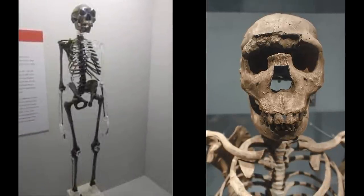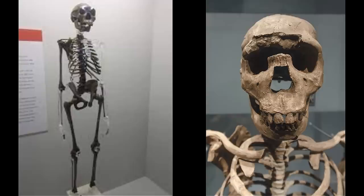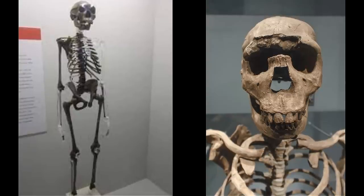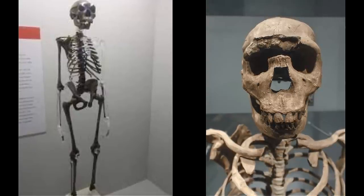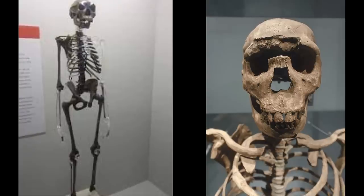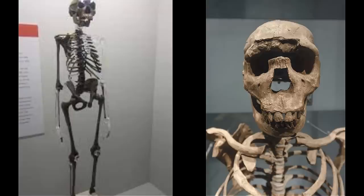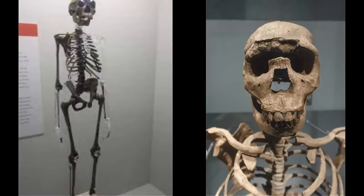Nariokotome Boy was clearly right-handed, as indicated by the deeper bone insertions of his deltoid muscles in his clavicle, collar bone, and the greater length of his ulna. Yet knowing the hand bias of one individual tells us nothing about the handedness of the population he belonged to, let alone that of his entire species.